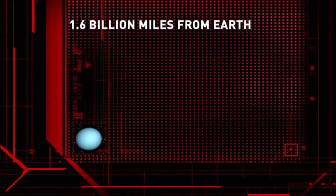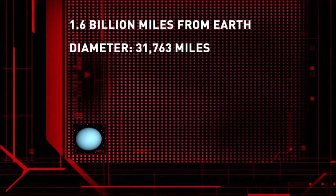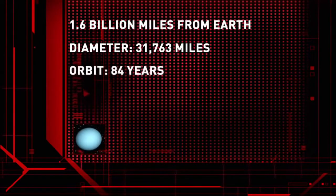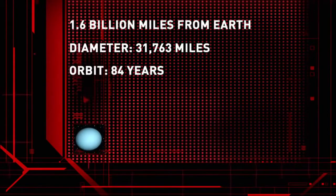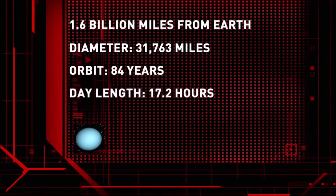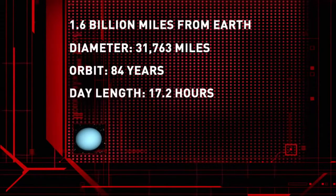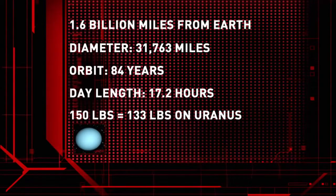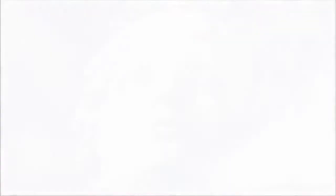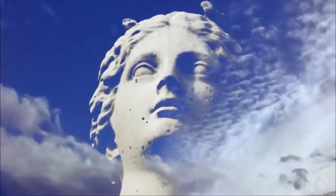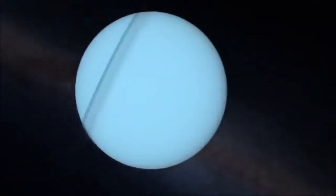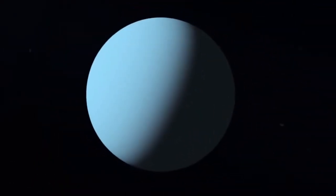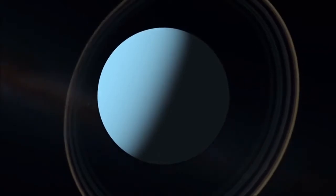Uranus is 1.6 billion miles from Earth. It has a diameter of nearly 32,000 miles, four times Earth's diameter. It takes 84 Earth years for Uranus to orbit the sun. One day on Uranus is a little over 17 hours. If you weigh 150 pounds on Earth, you would weigh 133 pounds on Uranus. Named after the Greek god of the sky, Uranus has the most off-kilter axis of any planet in the solar system. At an angle of 98 degrees, the planet is actually spinning on its side.